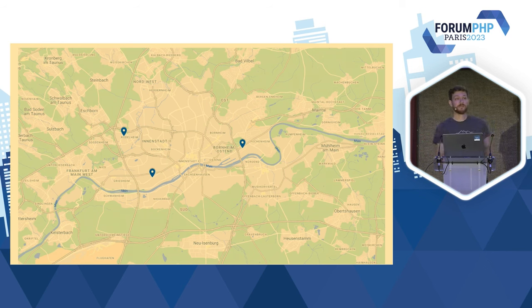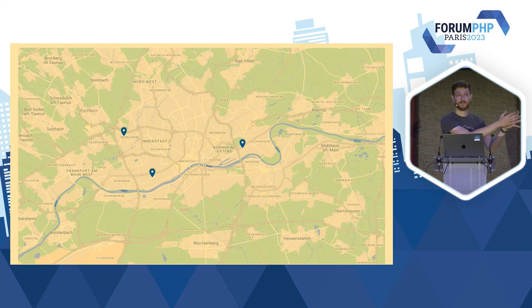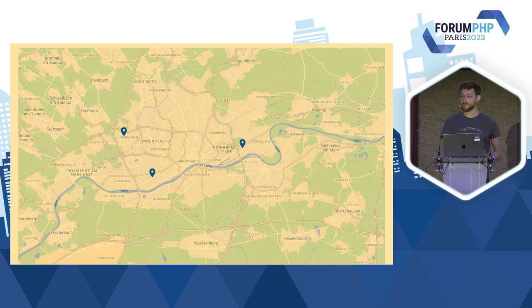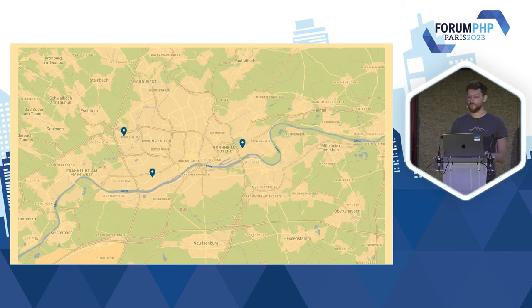Si je déployais un serveur, il irait dans un data center. Si le data center brûle, est inondé ou déconnecté d'Internet — ce qui malheureusement arrive, rarement heureusement — mon serveur tombe avec. Lambda : mon instance va tourner sur un serveur dans un data center, mais si le data center tombe, Lambda va automatiquement créer des nouvelles instances sur les autres data centers. Donc, de base, on a de la redondance, ce qui est plutôt sympa. Ça ne coûte pas plus cher, c'est comme ça que ça fonctionne.